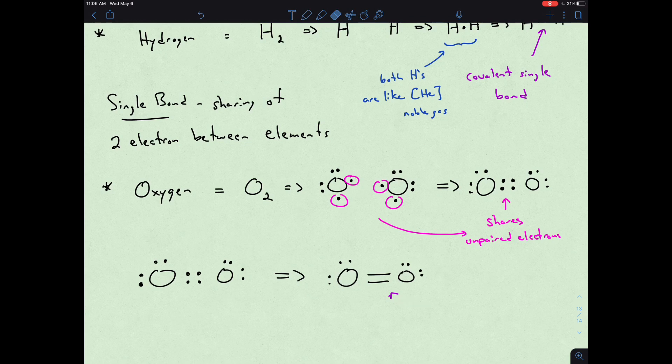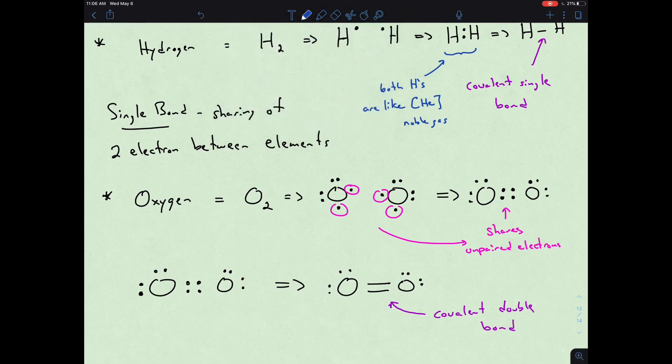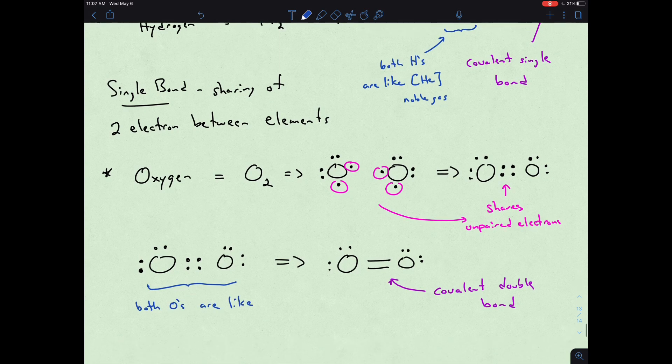Here we have a covalent double bond. If we look at both of our oxygens, both of these are like neon, again our noble gas. Neon has eight electrons and each one of these oxygens has eight electrons around it.